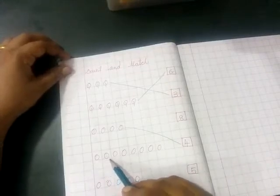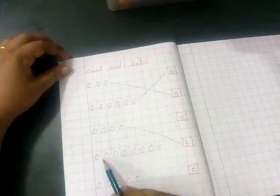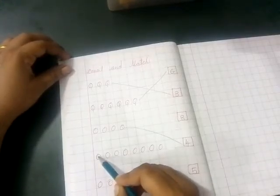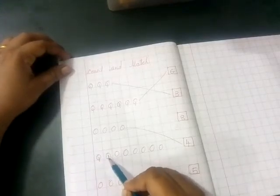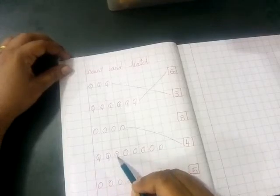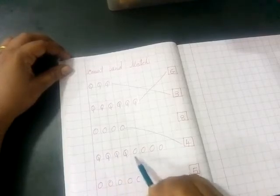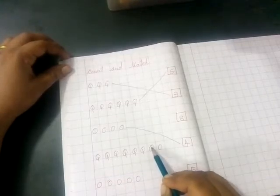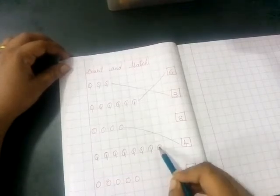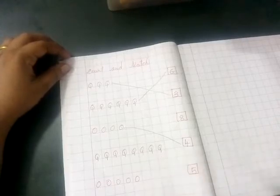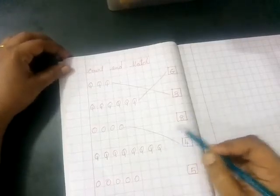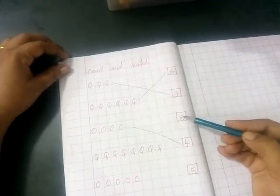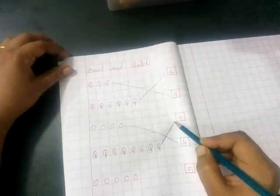Now, count these balls. Here are so many balls, isn't it? Let's count slowly, slowly. 1, 2, 3, 4, 5, 6, 7, 8. Yes. How many balls? 8 balls. Where is number 8? Okay. Here it is. So, match.